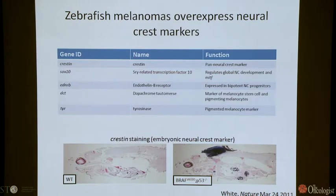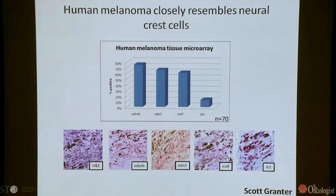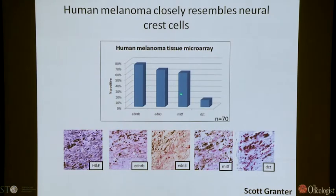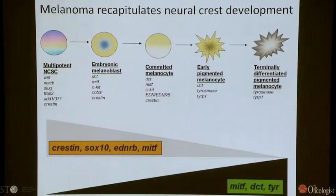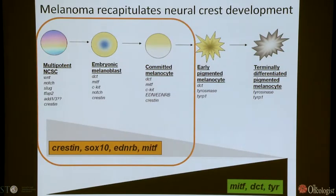This suggested that many melanomas recapitulate early neural crest development, which turns out to be true in human melanoma as well. In a tissue microarray of 70 human melanomas stained for early neural crest markers like EDNRB and EDN3, almost 80% express these markers; only about half express MITF, and only about 15% express the differentiation marker dopachrome tautomerase. Taken together, zebrafish and human data suggested that many melanomas recapitulate early neural crest development, expressing markers associated with neural crest stem and progenitor cells rather than differentiation genes.